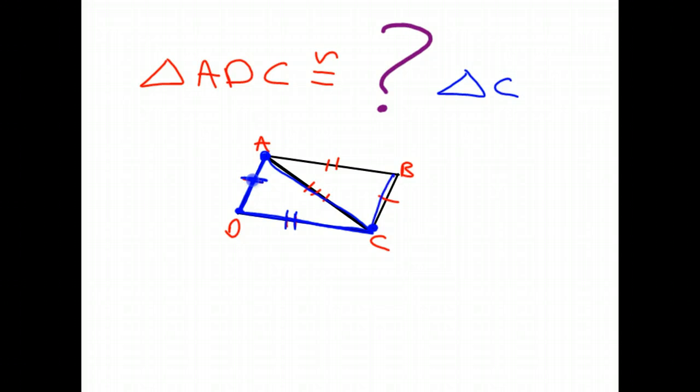We're going up the side with one hash to B and then over to the side with two hashes, which takes us back to A. So triangle ADC is congruent to triangle CBA.